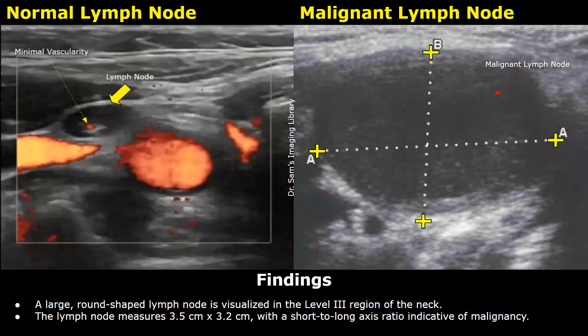Here is another example of a malignant lymph node and its report. These are the findings: a large, round-shaped lymph node is visualized in the level 3 region of the neck. The lymph node measures 3.5 by 3.2 centimeters, with a short-to-long axis ratio indicative of malignancy.